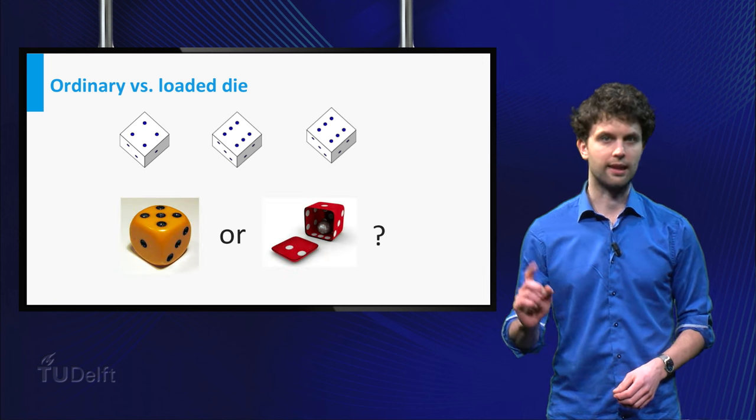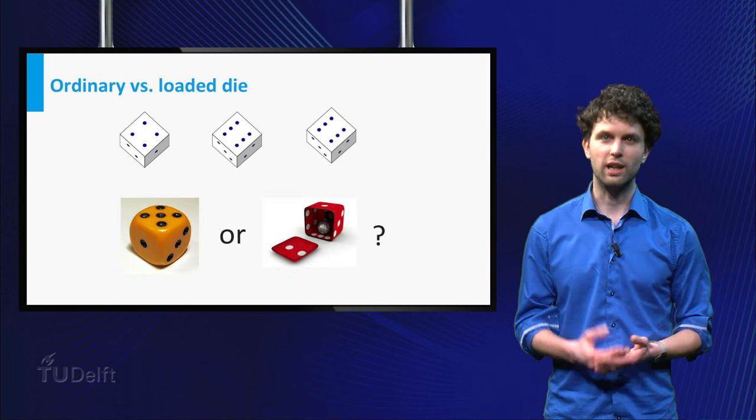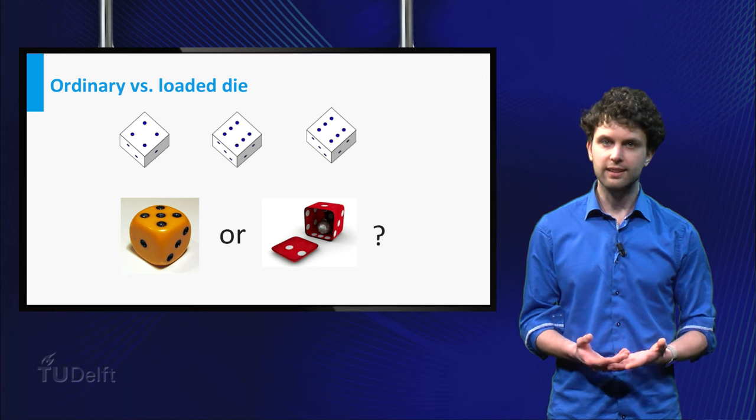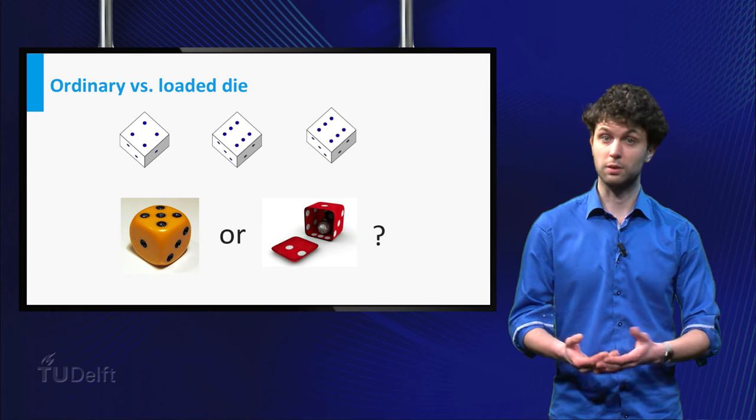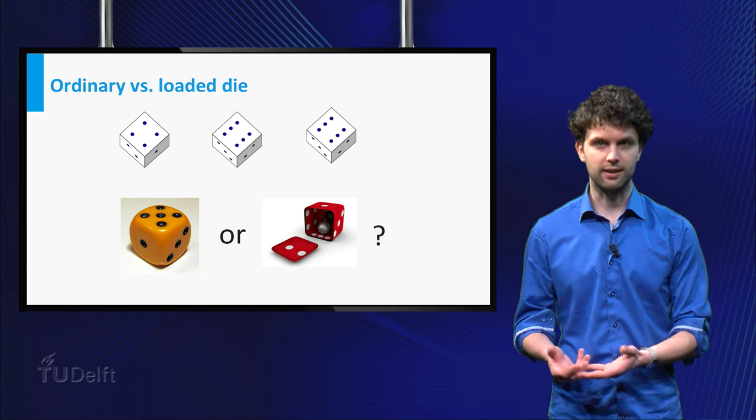Can you know for certain which die I have thrown? Well, you can't. A throw with either of the dies could lead to 466. So let's rephrase the question. Which die do you think I threw?